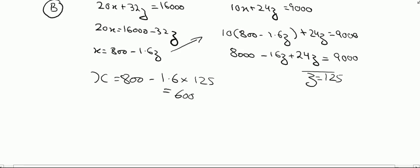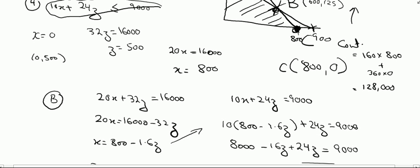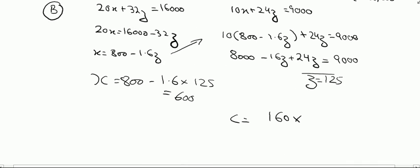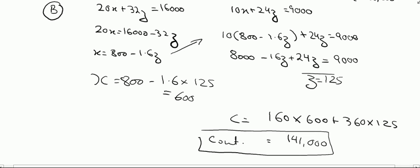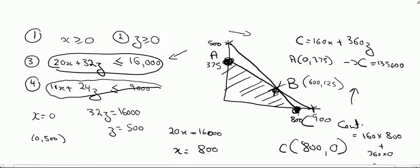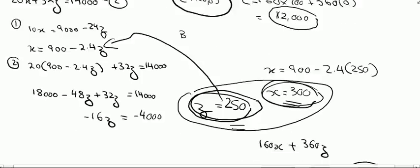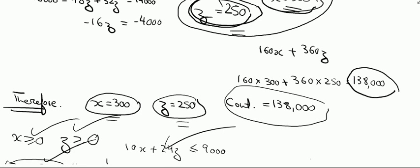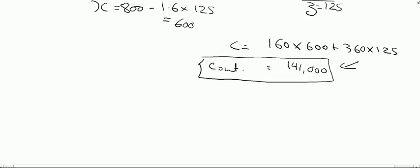At point B — (600, 125) — the contribution is: 160 × 600 + 360 × 125 = 96,000 + 45,000 = 141,000. To conclude, the new maximum contribution is 141,000. Previously, the maximum contribution calculated in the previous video was also at point B and was 138,000. So the contribution has increased from 138,000 to 141,000.